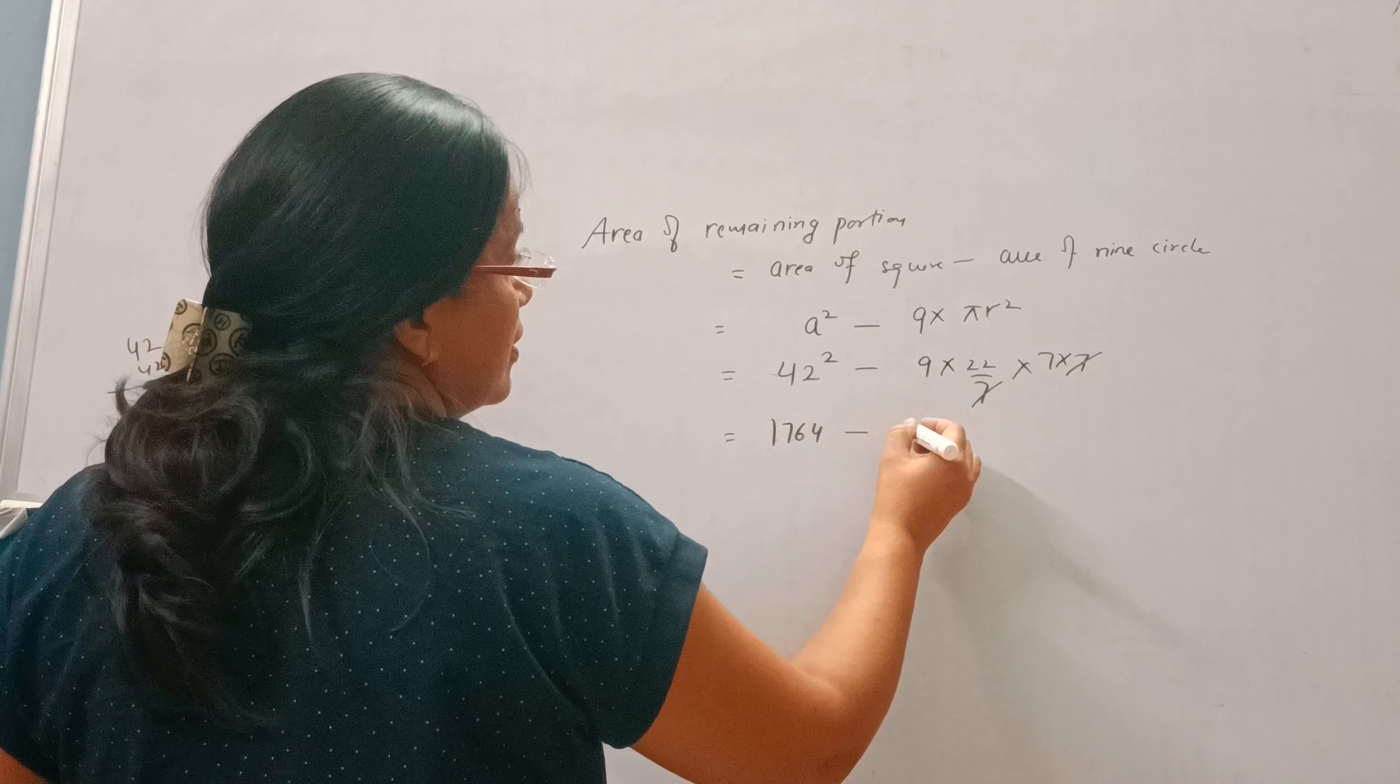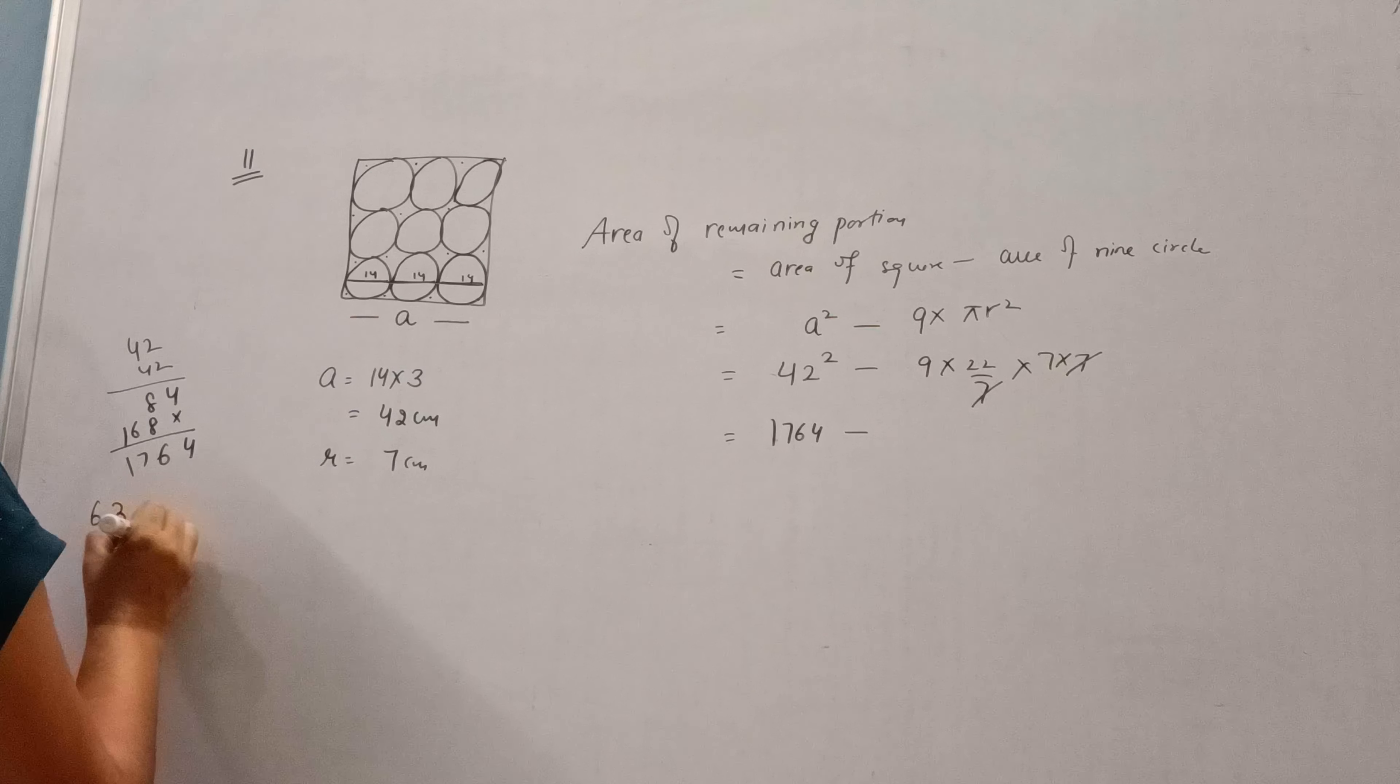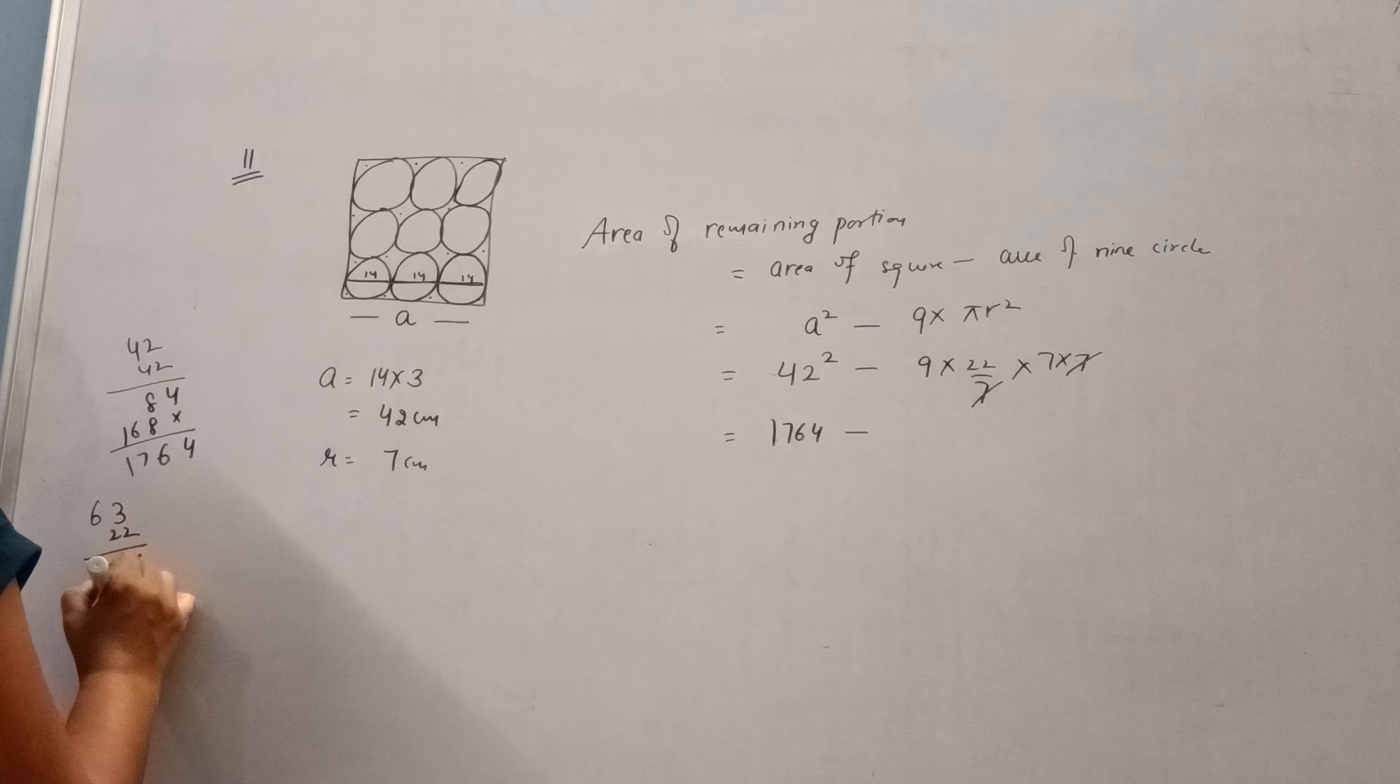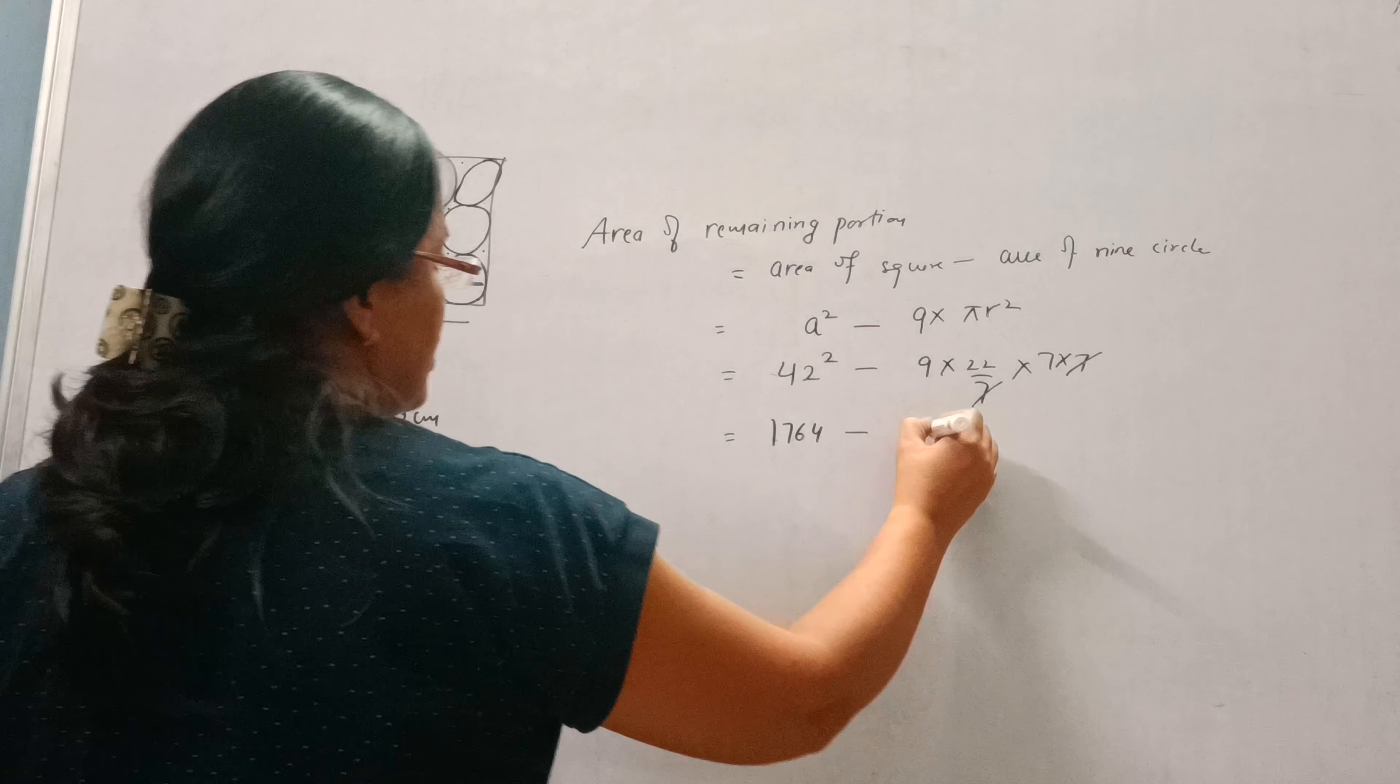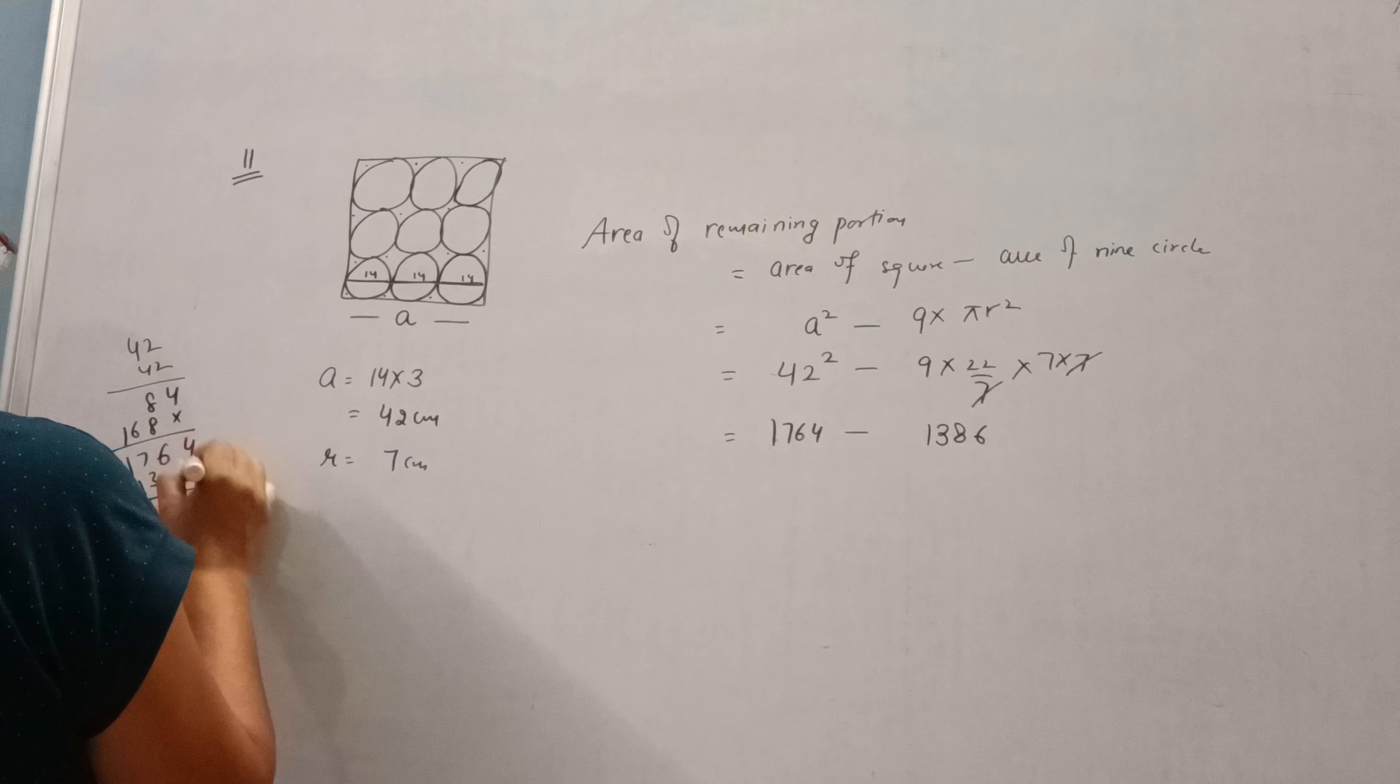Minus 9, 7 cancels, 63 into 22 equals 1386. Now subtract 1386 from 1764.